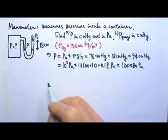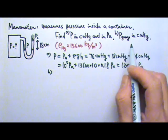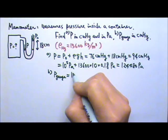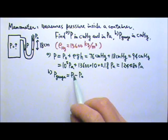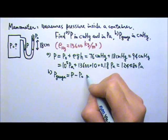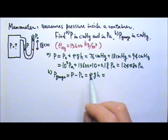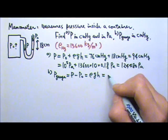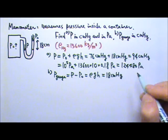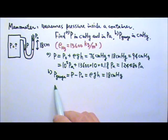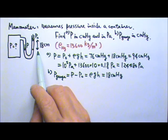So that's part A. In part B, we want the gauge pressure. Gauge pressure is the absolute pressure minus the atmospheric pressure. If I subtract the atmospheric pressure, I get the ρgh of the mercury column — and that's 18 centimeters of mercury column. So the gauge pressure is 18 centimeter mercury.